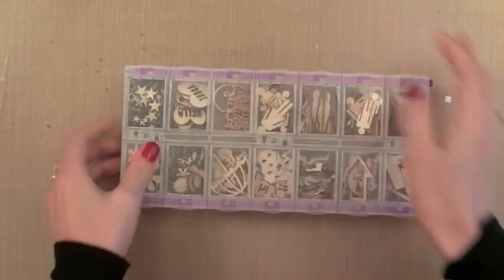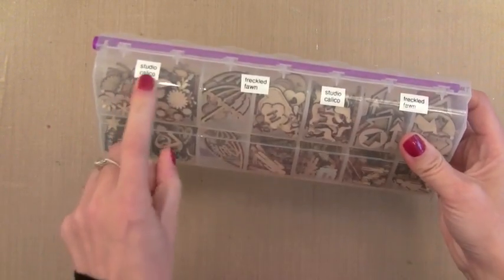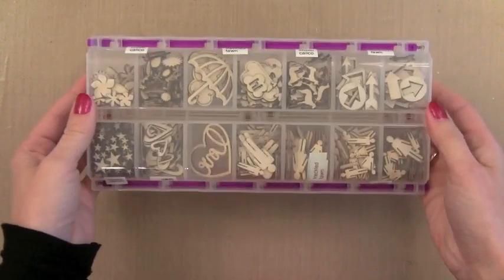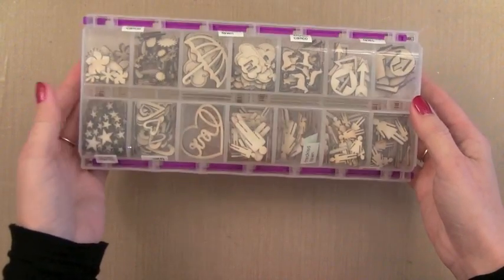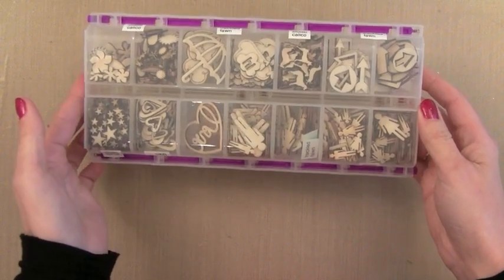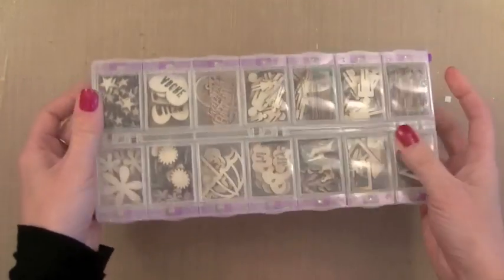Now this is the smaller of the two, but it has 14 larger compartments. I put labels on the bottom side of it so I know what brand each of the pieces are. You can put labels on anywhere. I like to leave the top clear so I can see it in it easily.